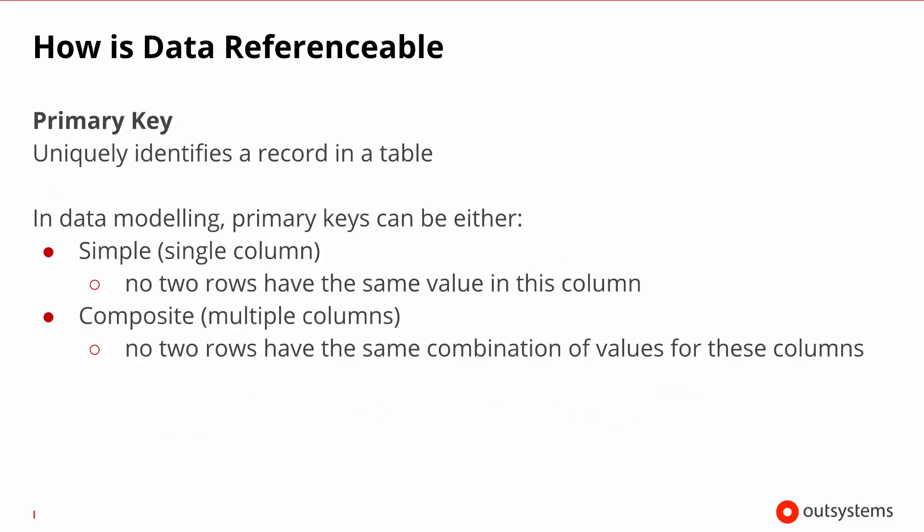Before we go into the specifics of OutSystems, let's talk about how data is referenced in general terms in databases. You have the concept of a primary key — a way to uniquely identify a particular record of your data type. Primary keys can be of two kinds: a simple primary key, where a single attribute dictates the uniqueness of the record, or a composite primary key, whereby a collection of columns dictates a unique record.